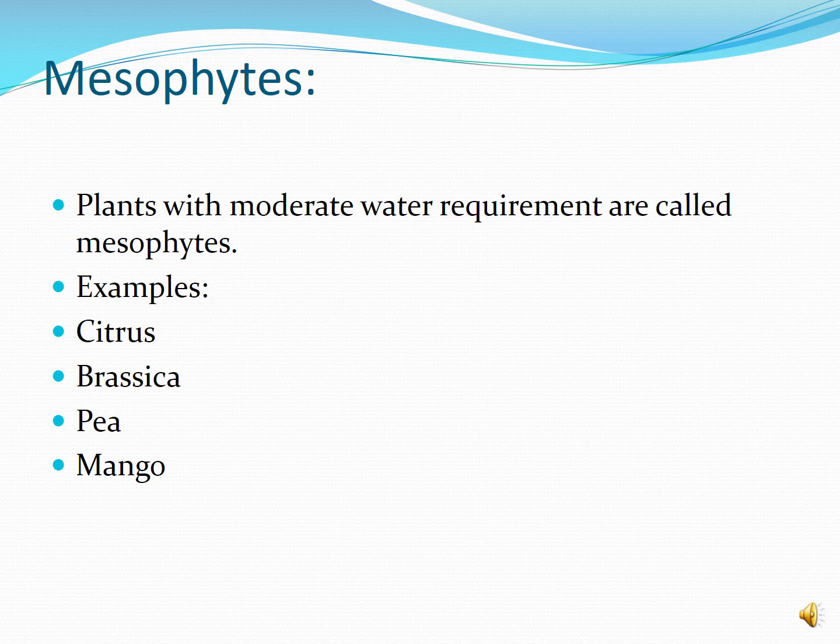Mesophytes are plants with moderate water requirements — those which require a medium level of water. These plants usually grow under average water supply. Under limited water supply, they close their stomata to prevent transpiration. Under abundant water supply, they keep their stomata open to transpire and remove extra water. Features include stomata on the lower surface of leaves, well-developed supporting tissues, and root hairs with a greater area of water absorption. Examples are citrus plants, brassica, pea, and mango.